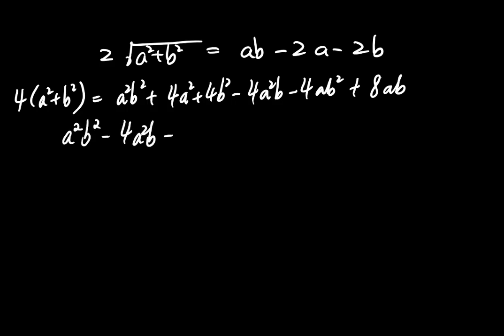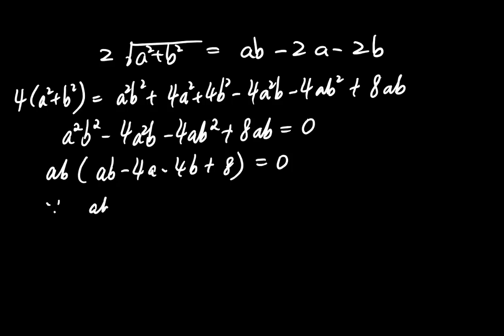But after simplifying everything, we arrive at AB times the quantity AB minus 4A minus 4B plus 8 equals 0. Now, since AB is not 0, we focus on the second factor. AB minus 4A minus 4B plus 8 equals 0.